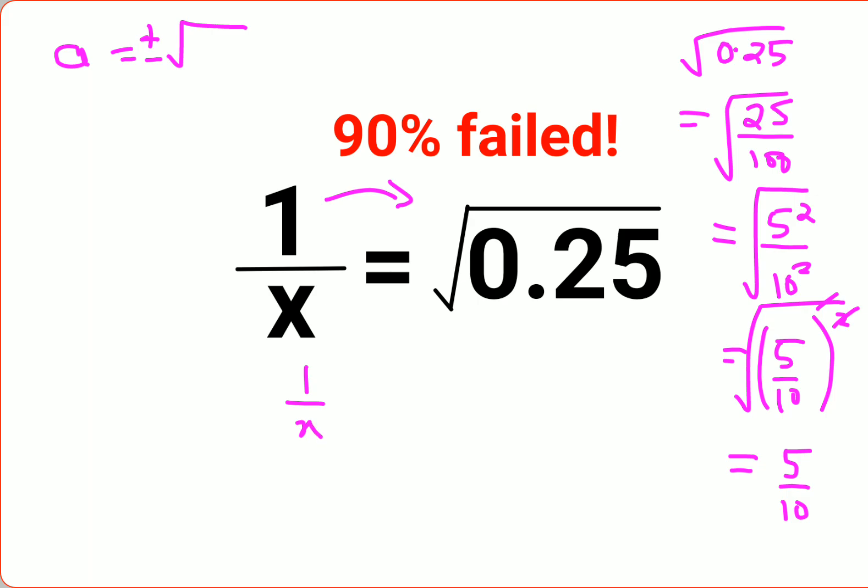So I can say value of 1 upon x is nothing but just 5 upon 10. This is also cancelling and this is getting 1 upon 2. So 1 upon x equals to 1 upon 2. Taking reciprocals on both the sides, I can say value of x equals to just 2.